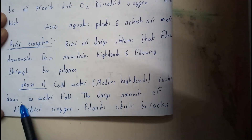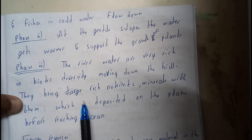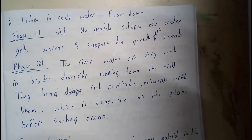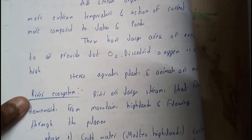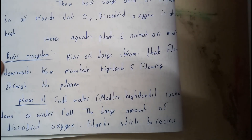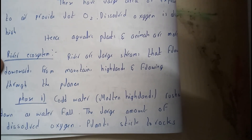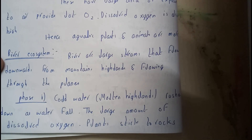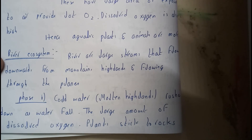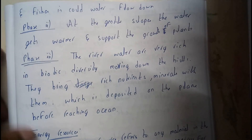Phase one: cold water from the mountains rushes down as a waterfall. Cold water has a large amount of dissolved oxygen. The plants stick to the rocks due to the pressure of the falling water, and fishes and animals in the cold water flow down with that current.